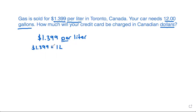We don't want to start with conversion factors — we want to start with just one unit. So let's start with the 12.00 gallons, since that's a single unit.